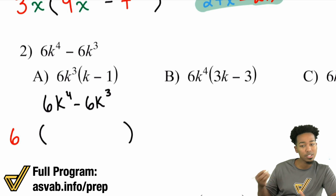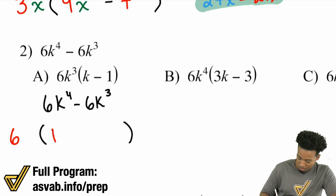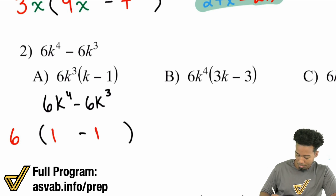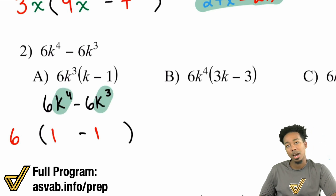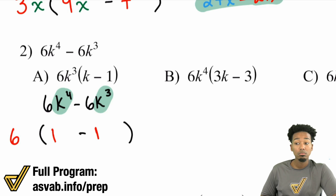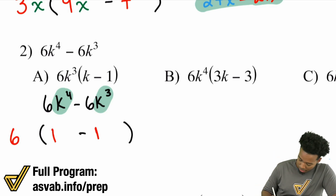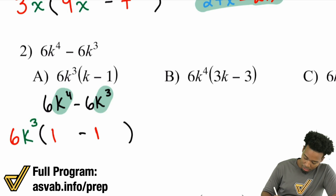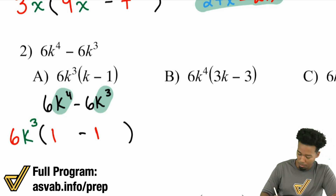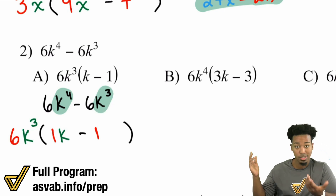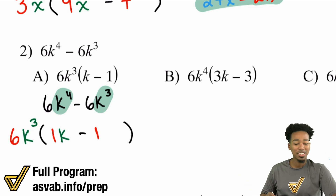Because if I do a 6 divided by 6, that's going to be 1. And then over here, if I do a 6 divided by 6, that's also going to be 1. Now let's go ahead and take care of the variables. The k to the power of 4 and k to the power of 3 — well, how many k's do they share? They share 3 k's. So I can take 3 k's out of each of them, so k cubed can come out. Here we have 4 of those k's — if I take away 3 of them, you just have 1 of them left. If I take all 3 k's out, that's it. So there's your answer — it's going to be 6k cubed.